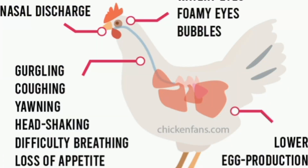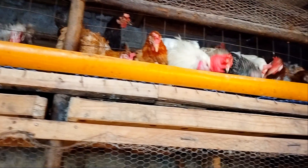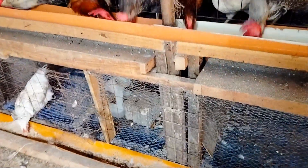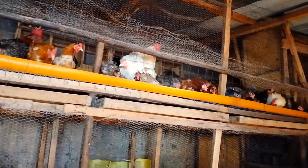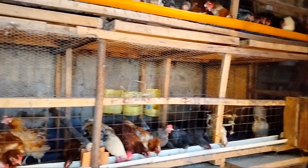Symptoms include sneezing and coughing, gasping or labored breathing, reduced egg production, decreased appetite, swelling around the eye, and discharge from nose and eyes. To prevent respiratory diseases, maintain good hygiene by cleaning and disinfecting the poultry house, ensure proper ventilation, prevent the buildup of dust, ammonia, and other harmful gases, implement biosecurity measures, and vaccinate your birds.